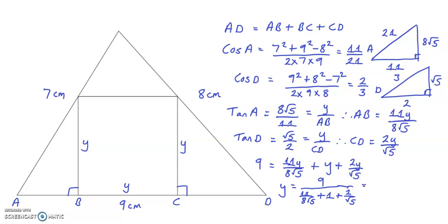Now this can be expressed as 9 over 11 over 8 root 5 plus 8 root 5 over 8 root 5 plus 16 over 8 root 5.